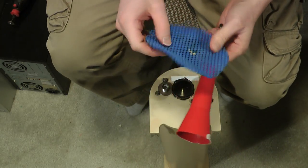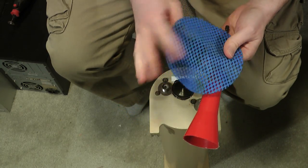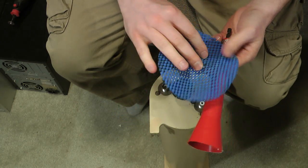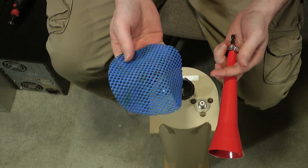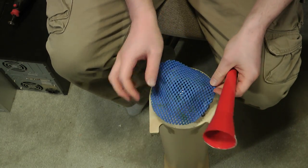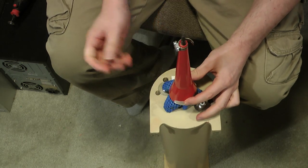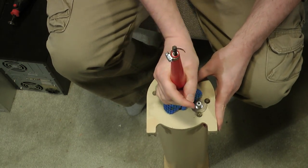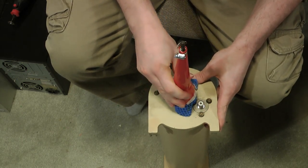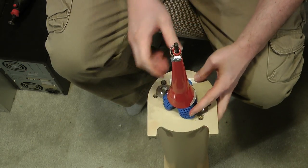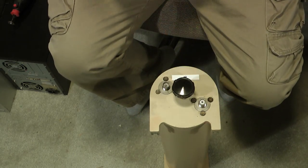you can just get one of these little jar opener things used around the kitchen. You can stick that around the knob, put the funnel over that, and now you've got a much higher friction solution going on here. So let me show you guys how well this works.